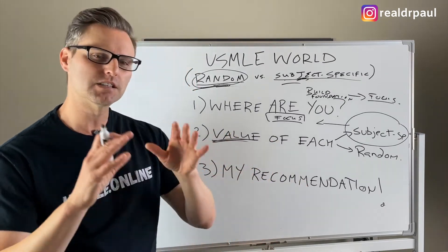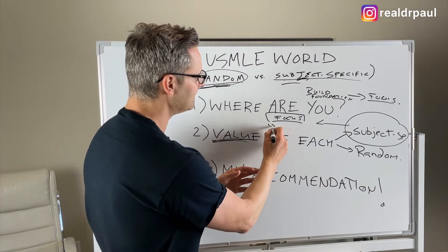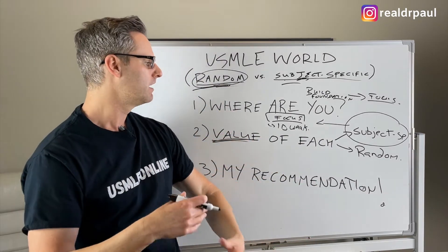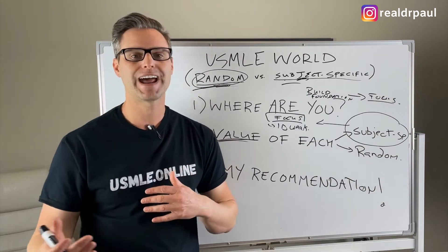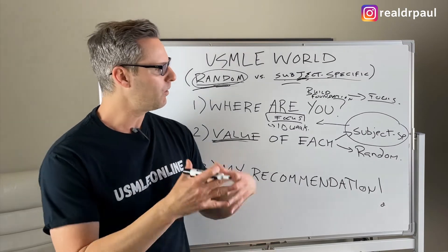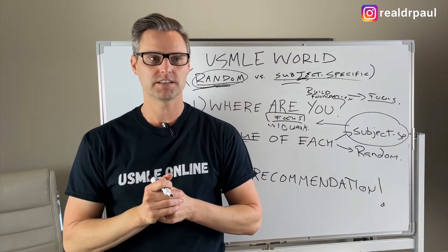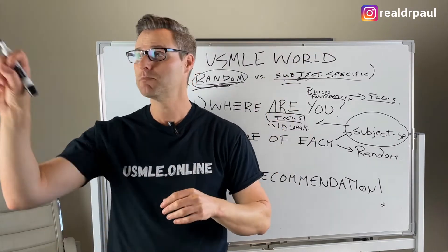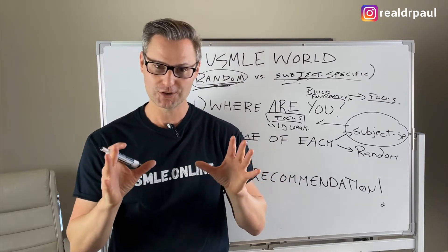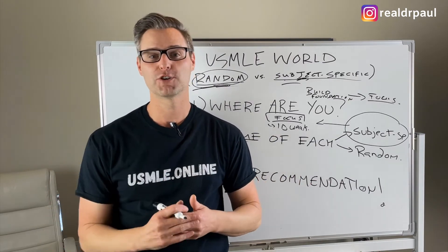The value of doing subject-specific questions is it allows you to focus and identify your weaknesses, which then allows you to go work on them outside of UWorld. If you're doing cardio-anatomy and you got 30%, you know that's an area you need to focus on. But if you're doing random and you didn't even get a cardio-anatomy question, you won't be able to identify it as a weakness — you just made scattered mistakes. That's a huge problem because you move on without improving it, and you go into your exam thinking you're a lot better than you are. That's a recipe for an average or below-average score.